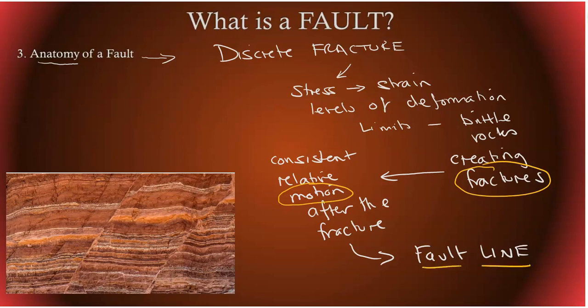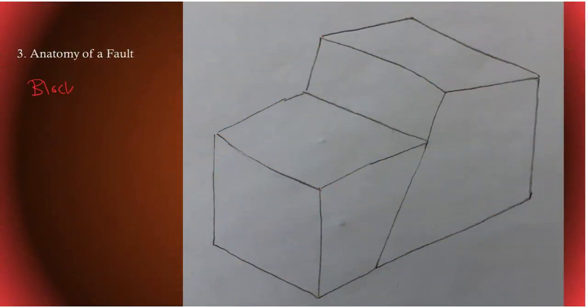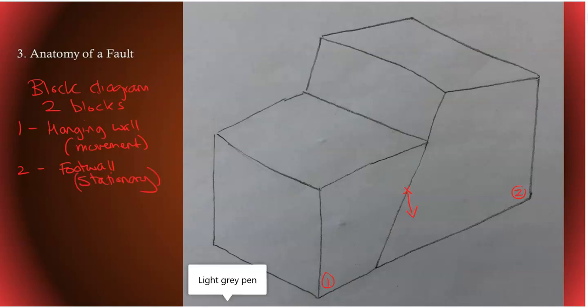So that leads us to a very simple diagram. So first we have a block diagram. And this means that there are two blocks, block one and block two. Now block one, this is going to be based on how we calculate the foot wall. This is going to be the hanging wall. And it's the one that has the movement in this situation with this generic fault. Number two, if it's not the hanging wall, it has to be the foot wall, which is stationary. So we can identify from this where the fault is and the fault line is in blue right here.